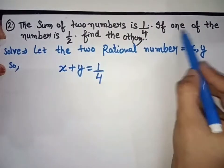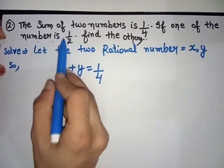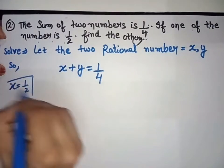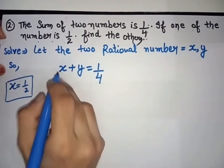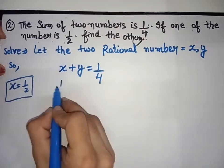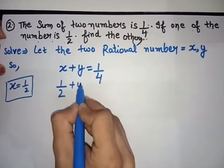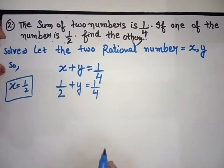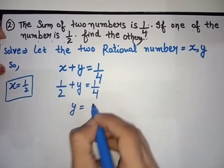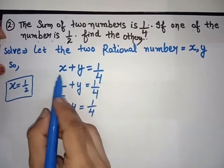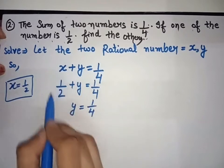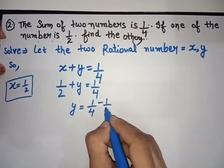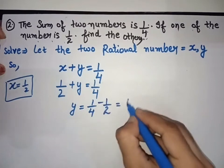Now, we keep y as it is and write: y equals 1 over 4 minus 1 over 2. The term 1 over 2 is positive on the left side; when it moves to the right-hand side, its sign becomes minus. So we have y equals 1 over 4 minus 1 over 2.